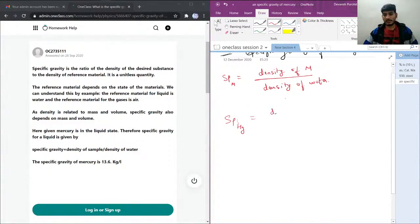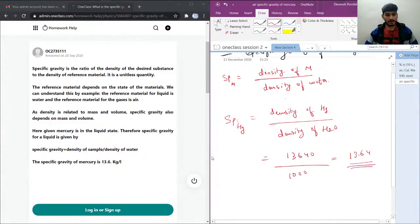I know the density of mercury is 13,640 and density of water is 1000, therefore it will be 13.6.